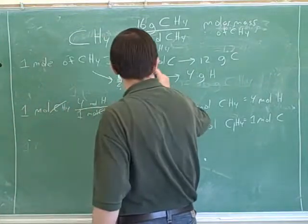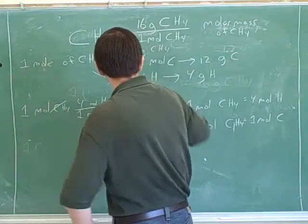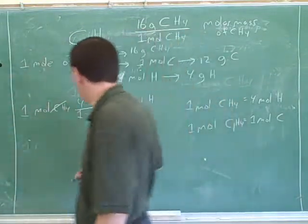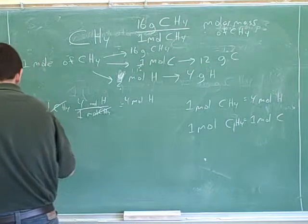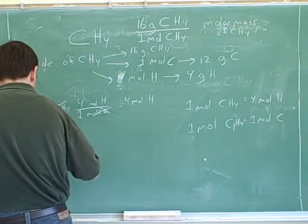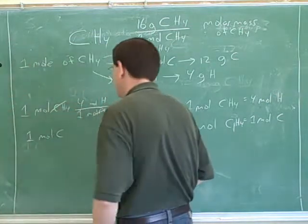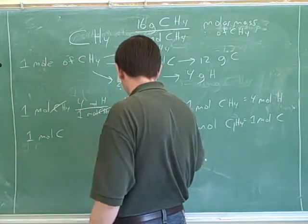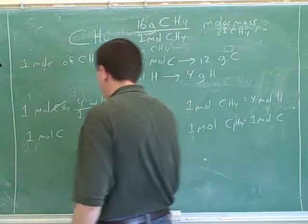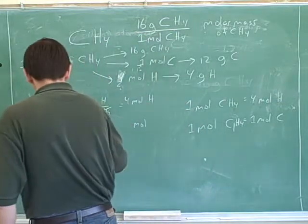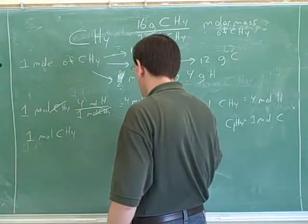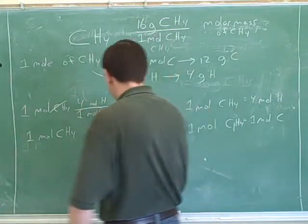I also asked you how many moles of carbon there was in one mole of methane. Well, that should be even simpler. The starting units there are moles of methane, and the target units are moles of carbon.